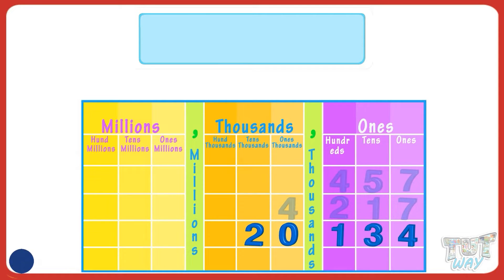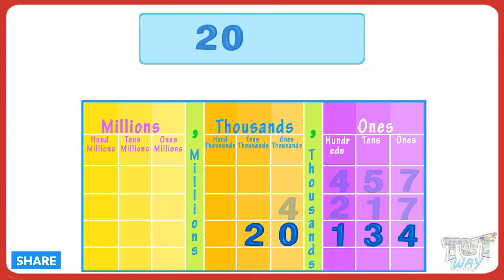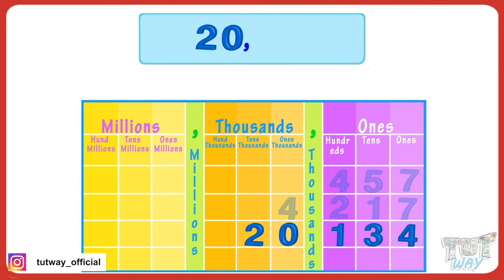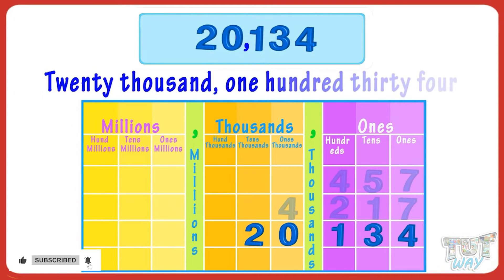Now let's read the number. You have to read numbers separately from all periods, along with the period name. Two and zero are in the thousands period, so read it as '20 thousands' and place a comma after 20. One, three, and four are in the ones period — read them according to place values as 'one hundred and thirty four.' So we write and read the number as 20,134: twenty thousand, one hundred thirty-four.